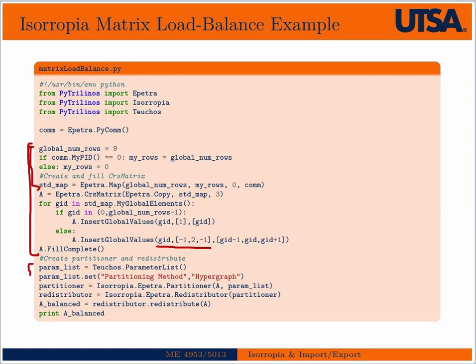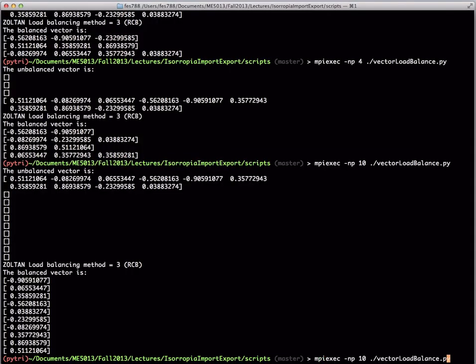The commands are basically exactly the same: we instantiate a parameter list, we set the method — this time we're going to use a hypergraph type partition — and we create a partitioner with matrix A, a redistributor, and then redistribute A. If we run this, we can print out A and see that it's redistributed.